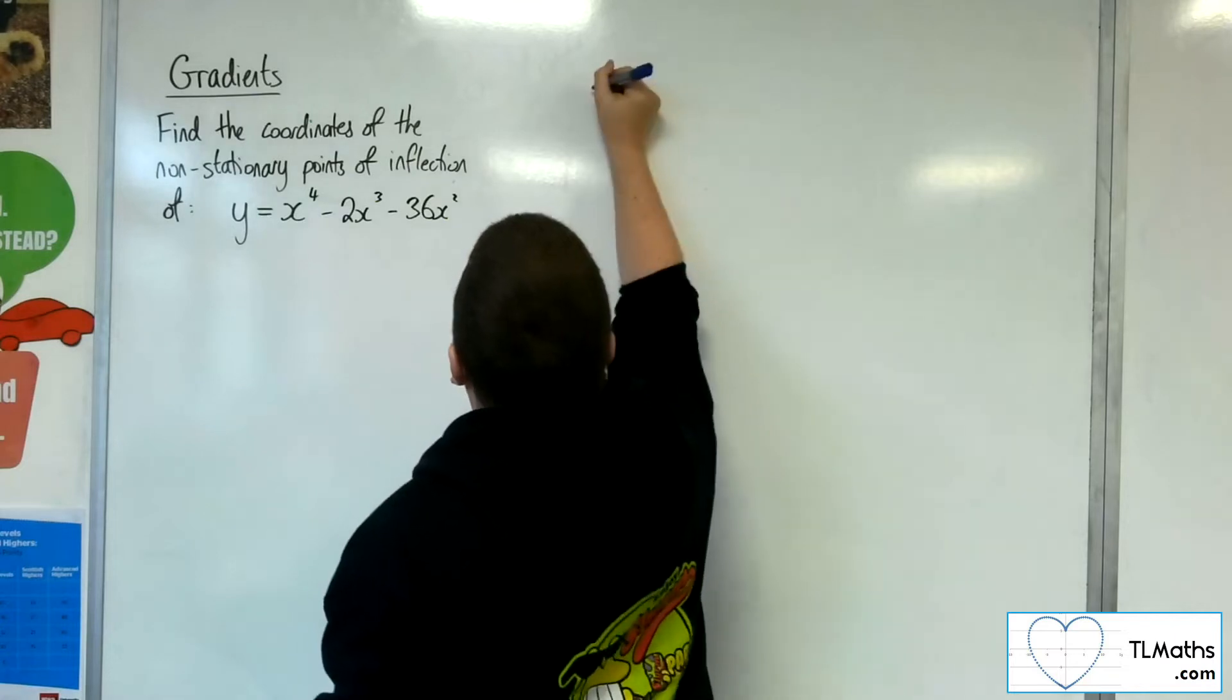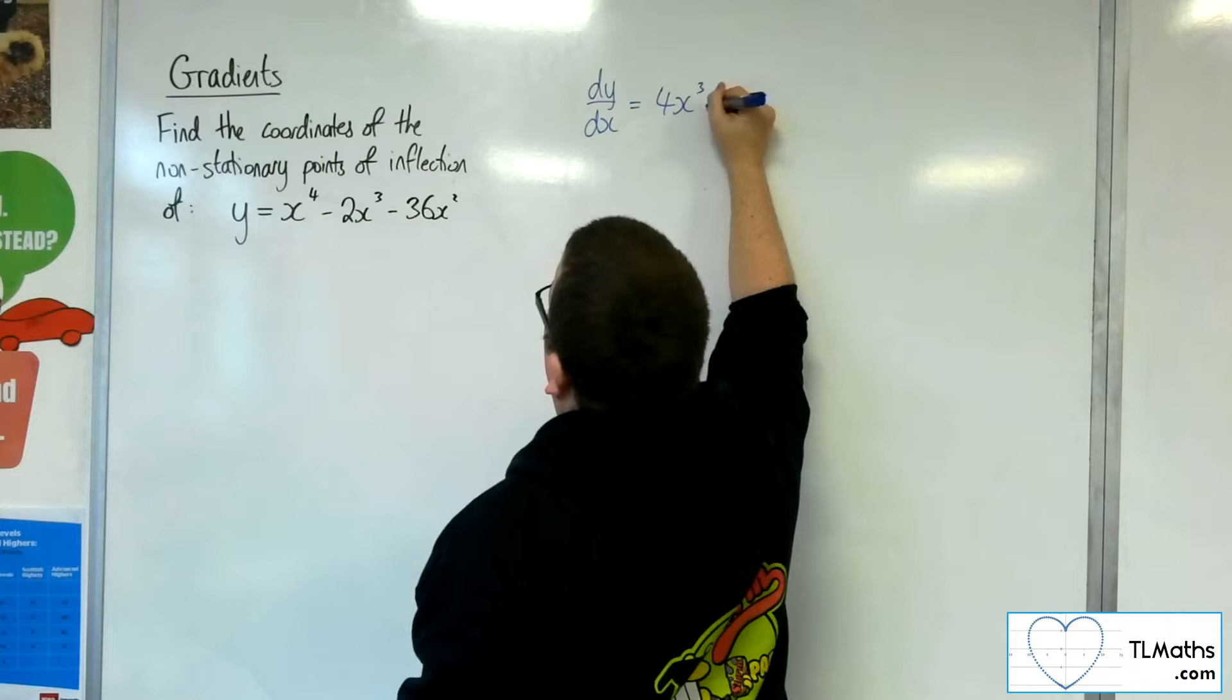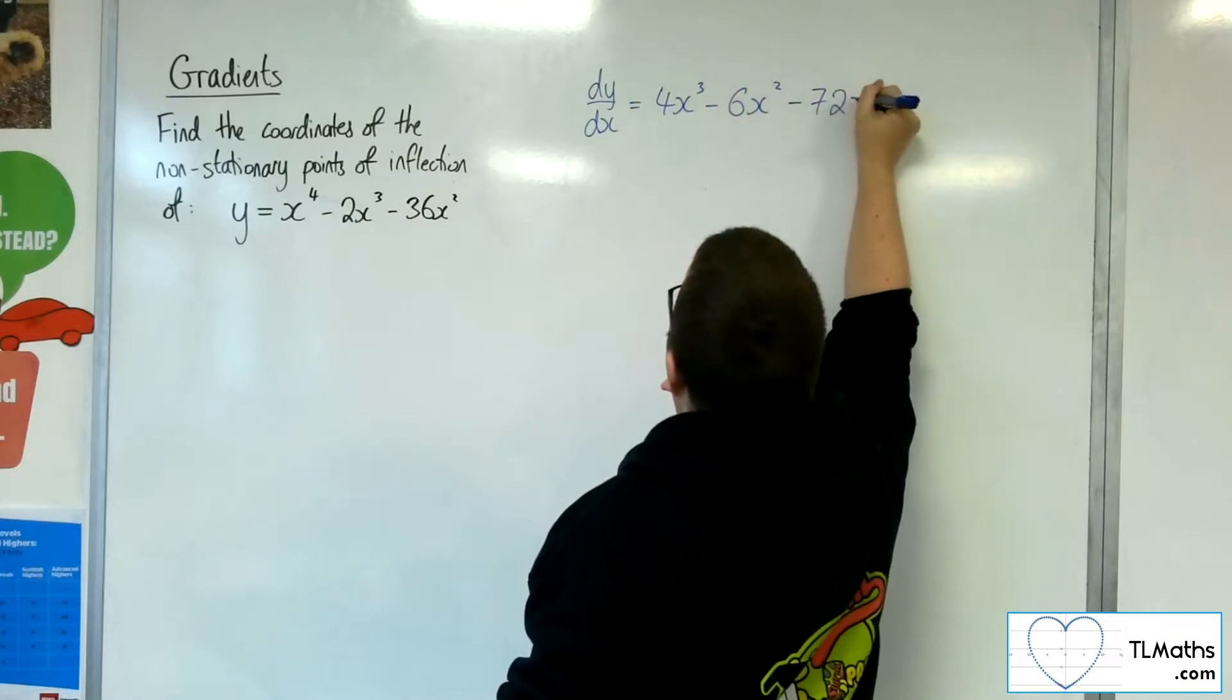So first of all, find the first derivative. So that's 4x cubed, take away 6x squared, take away 72x.